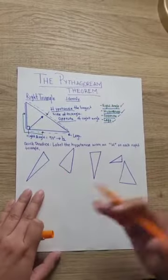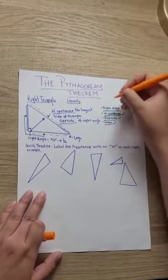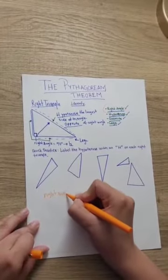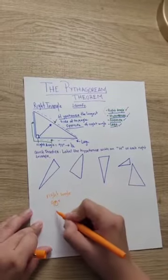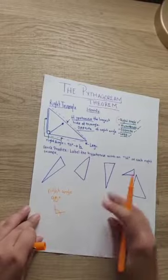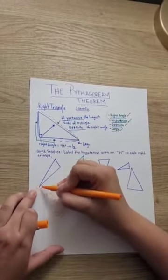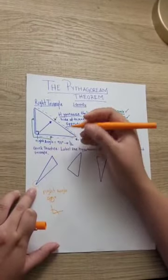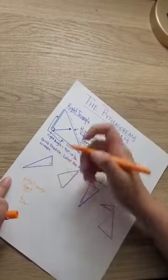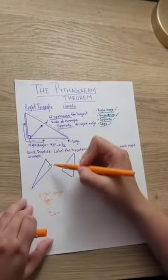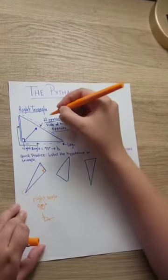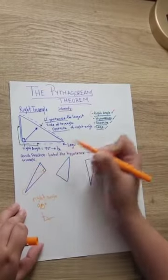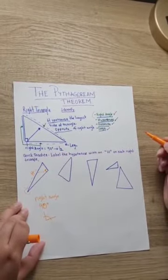For the first triangle, it may be easier to identify the right angle first. Remember, the right angle is a 90-degree angle and has an L shape. Looking at this triangle — does this angle have the shape of an L? No. What about this one? No. But this angle — it's a perfectly L-shaped angle, so this is going to be the right angle. The hypotenuse is on the opposite side, so this is going to be the hypotenuse, and I'll label it right there.